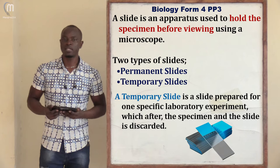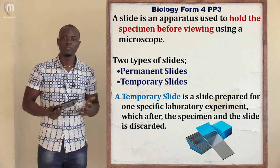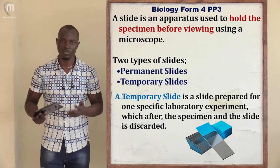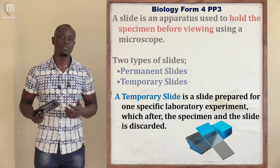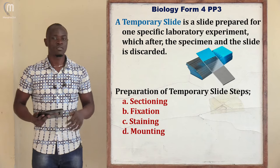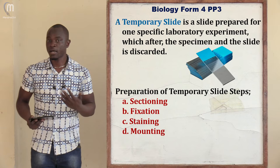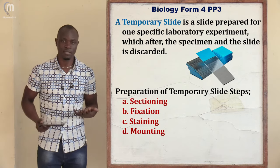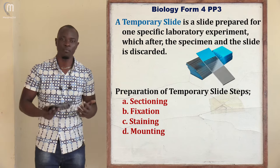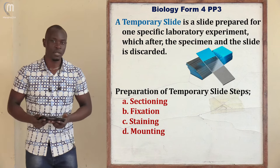For the temporary slide, as soon as you have used it for the current biology practical, the specimen can easily go bad or get destroyed, meaning you won't be able to use it in the next experiment. The permanent slide can be used over a very long period — maybe a term, a year, or even ten years. The temporary slide is only prepared for the current biology lesson or laboratory work only.